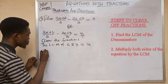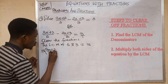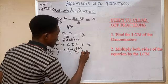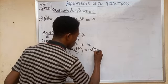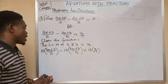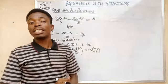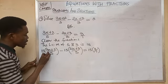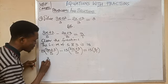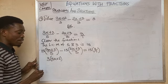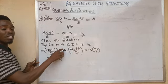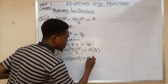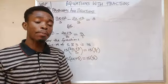Multiplying through by 15: 15 times (3x plus 2) over 5, minus 15 times (2x plus 3) over 3, equals 15 times 3 over 1. Since 15 divided by 5 is 3, we get 3 times (3x plus 2). Since 15 divided by 3 is 5, we get minus 5 times (2x plus 3). And 15 divided by 1 times 3 gives 45.